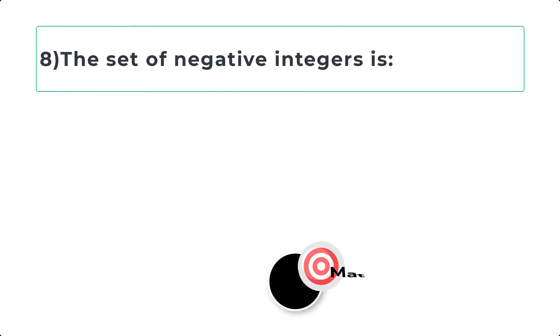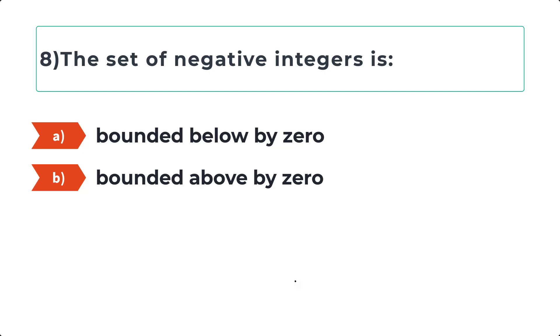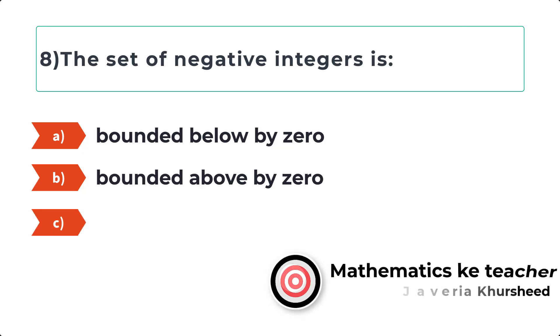Question 8: The set of negative integers is: A) Bounded below by zero, B) Bounded above by zero, C) Bounded below by minus one.